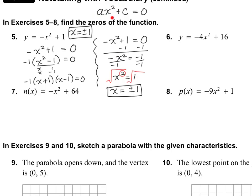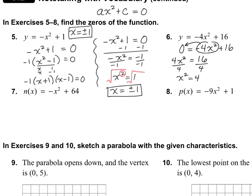Let's look at number six. Set zero equal to negative four x squared plus 16. Move the negative four x squared to the other side, making it positive four x squared equals 16, then divide by four to get x squared equals four. The square root of four is two, so the answer is x equals plus or minus two.